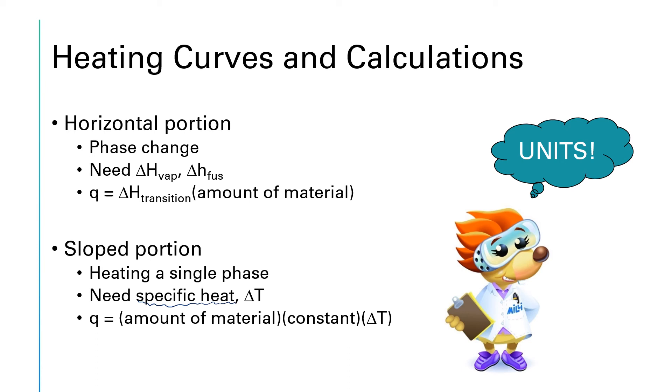So we're going to need that specific heat, we're going to need the ΔT, and of course we need to know how much stuff we have. So the Q for any of the slope portions will be given by the amount of material we have, multiplied by the constant such as the specific heat, and then multiplied by ΔT, the change in temperature.